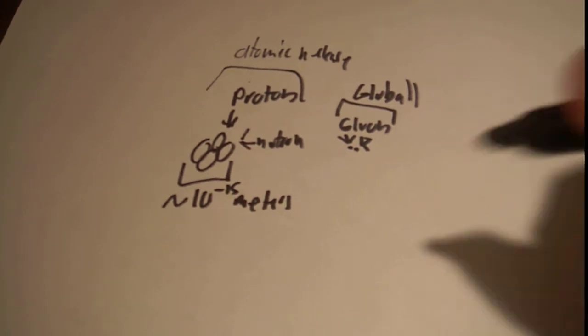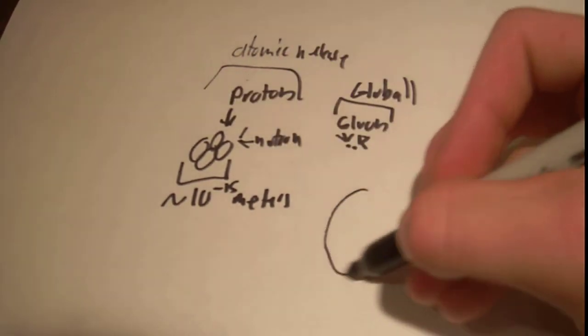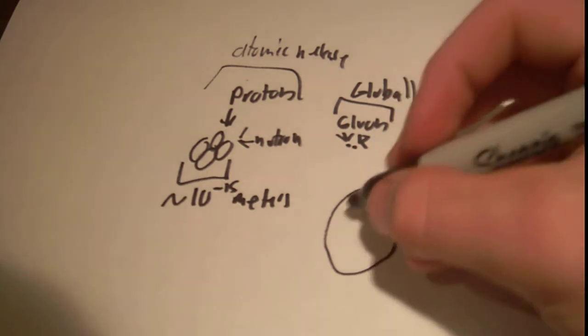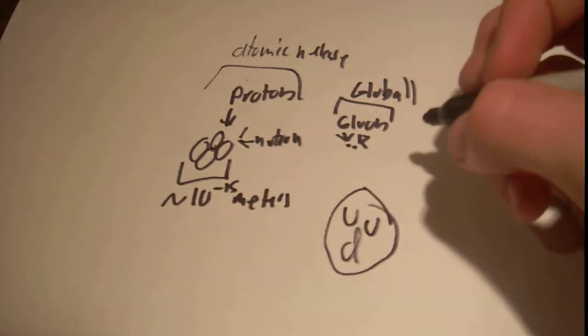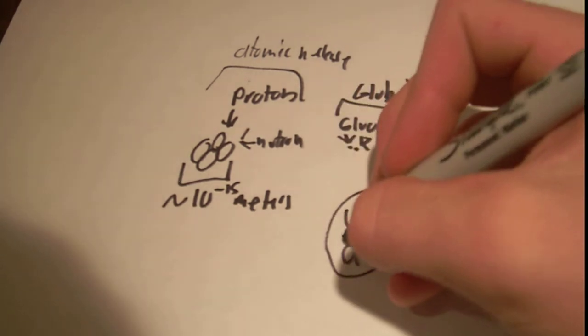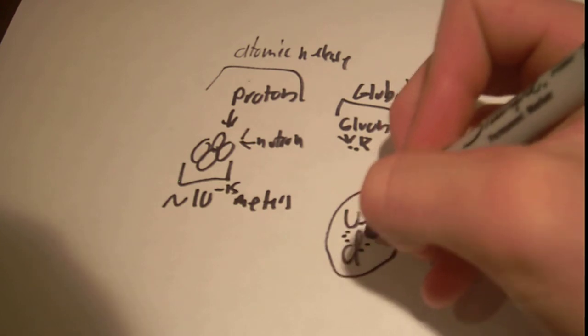So in case you're wondering, the way that, what's inside, if we were to zoom in on one of these protons, we would get quarks, right? Up, up, down. So what holds these quarks together? Little gluons.